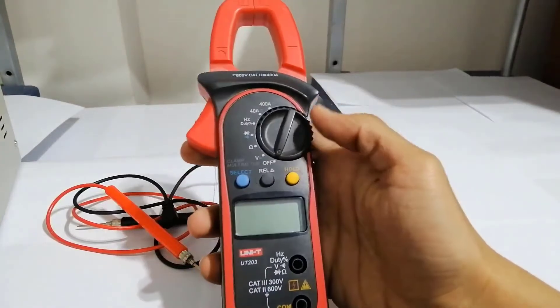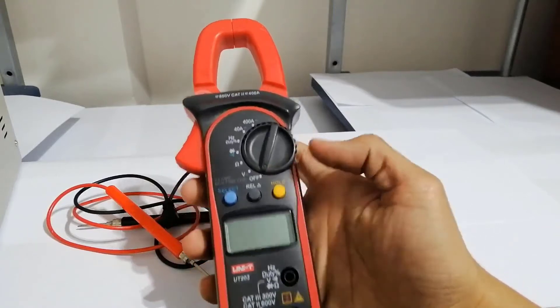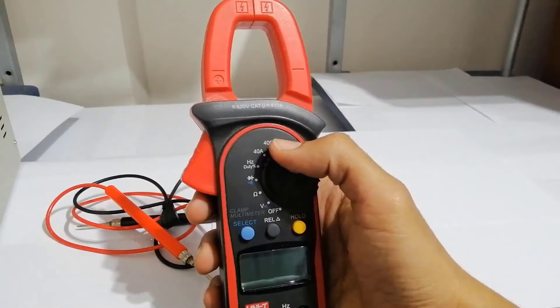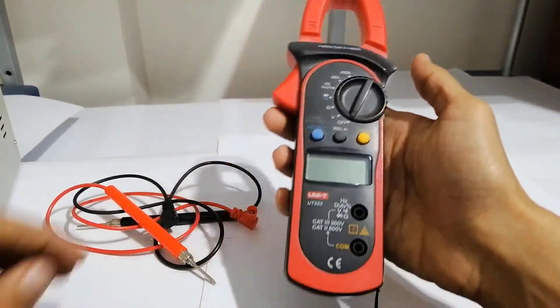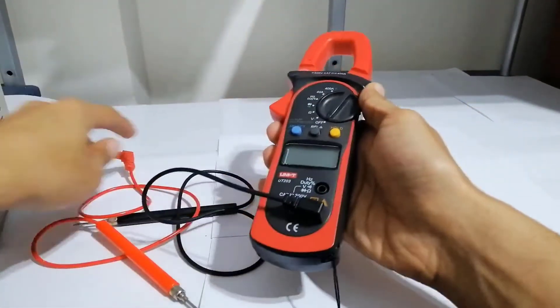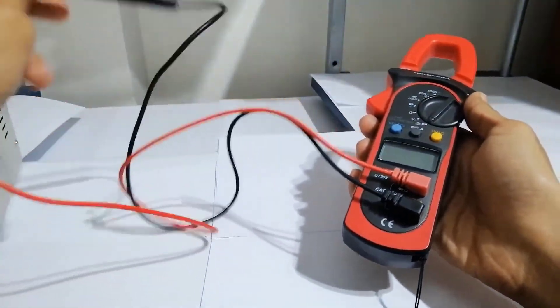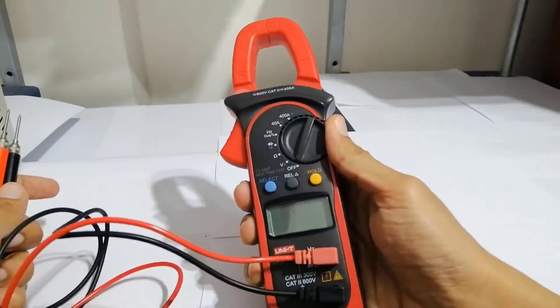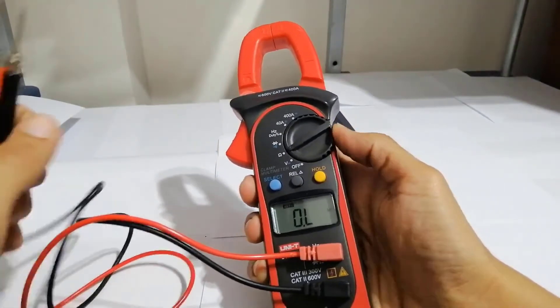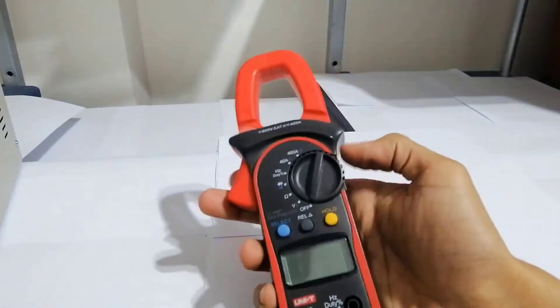Here we also have a selector and a display and two terminals, V over ohm and the common terminal. So to measure voltage and resistance, we should connect these two cords, this black in the common and this red in the V over ohm terminal. Let's change the selector to V or ohm to measure voltage and resistance. Okay, that's just like the ordinary avometer.